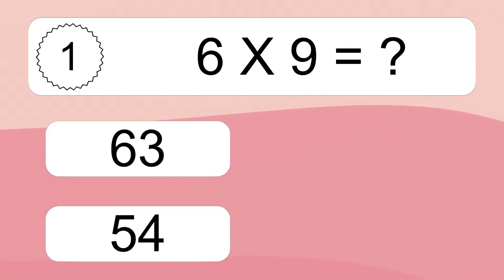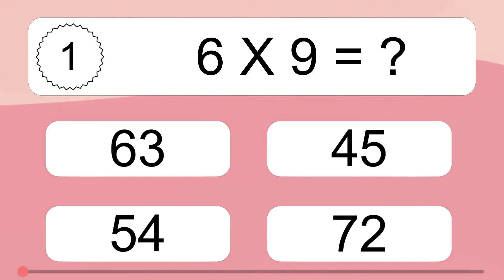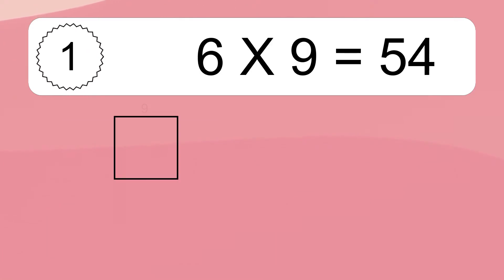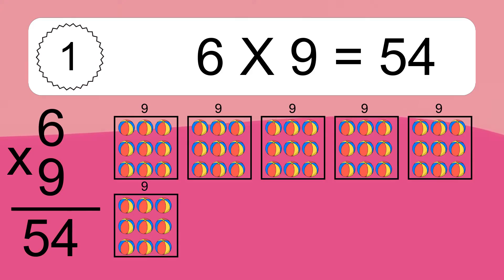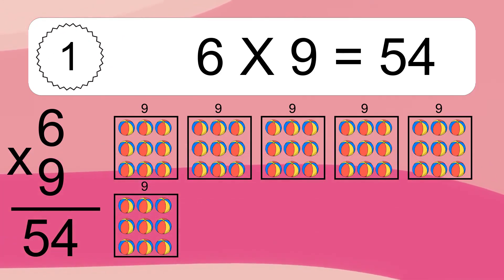Six times nine equals what? Six times nine equals 54. We have six boxes and each box has nine colorful balls inside. If you count all the balls in all the boxes together, you will have six times nine balls. This equals 54 balls.